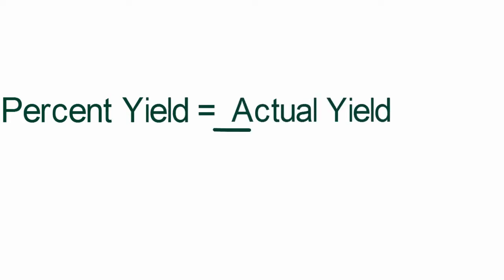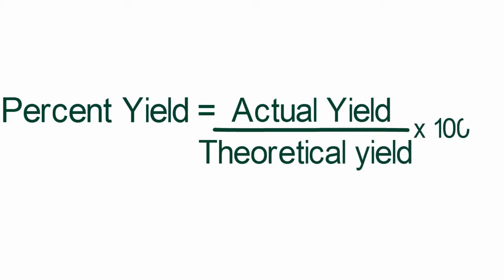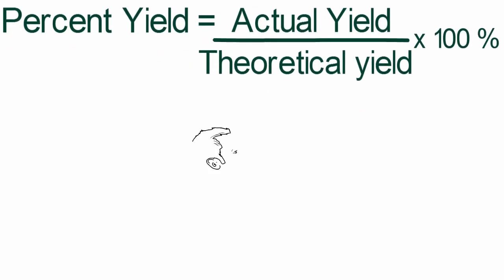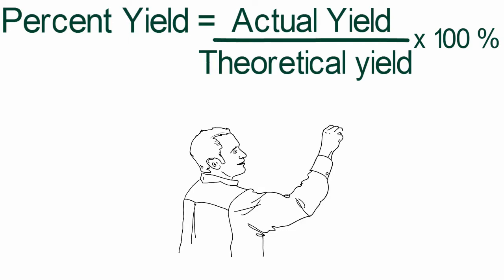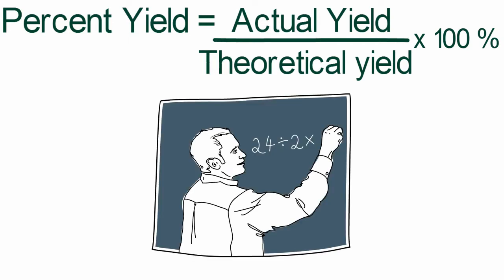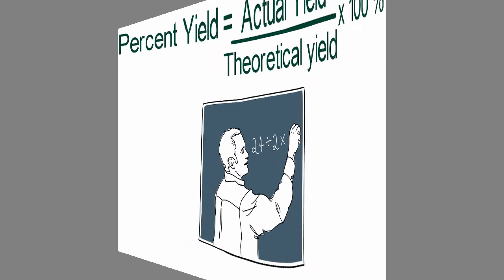Percent yield is the actual yield of a reaction divided by the theoretical yield of the same reaction multiplied by 100. This section contains an additional video on calculating limiting reagents and yields.